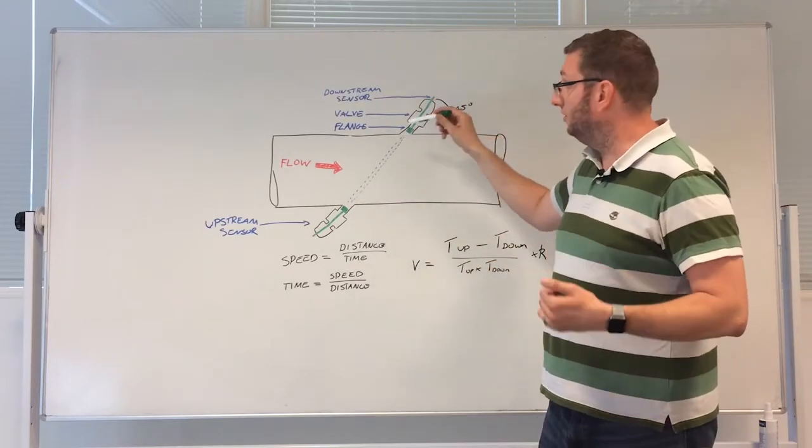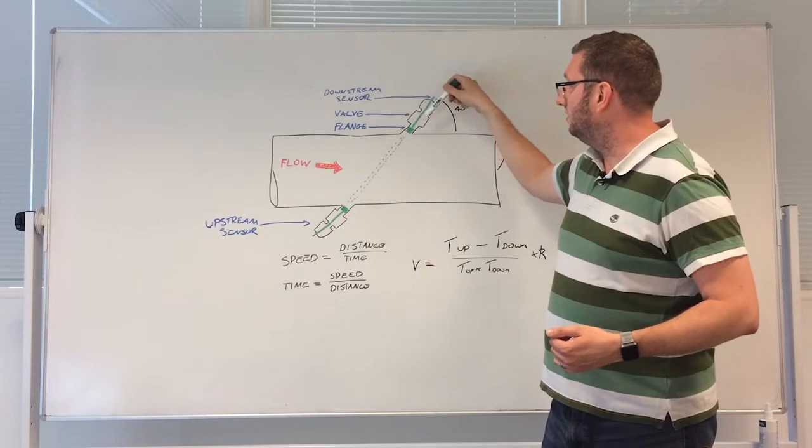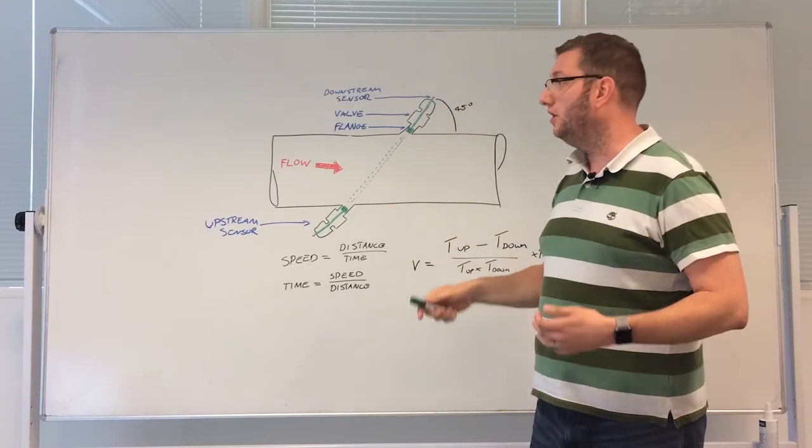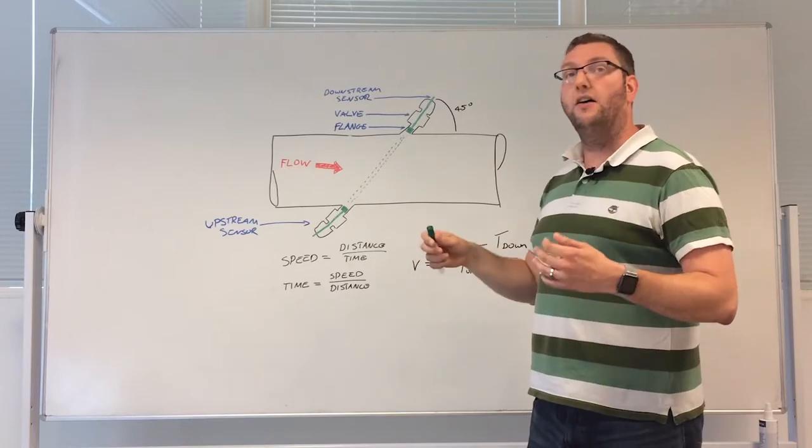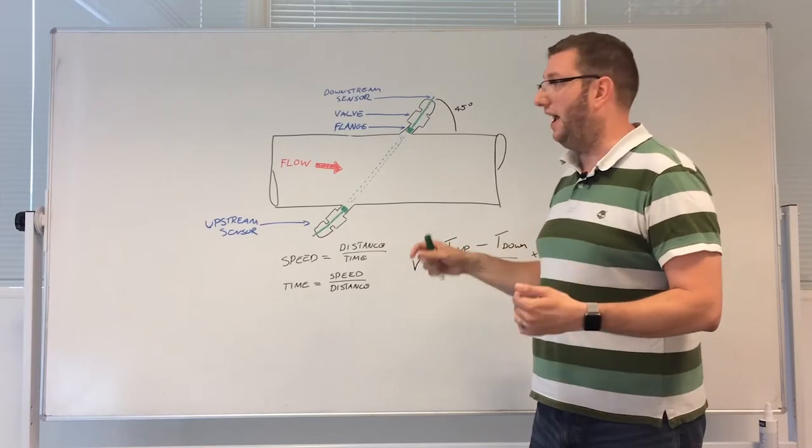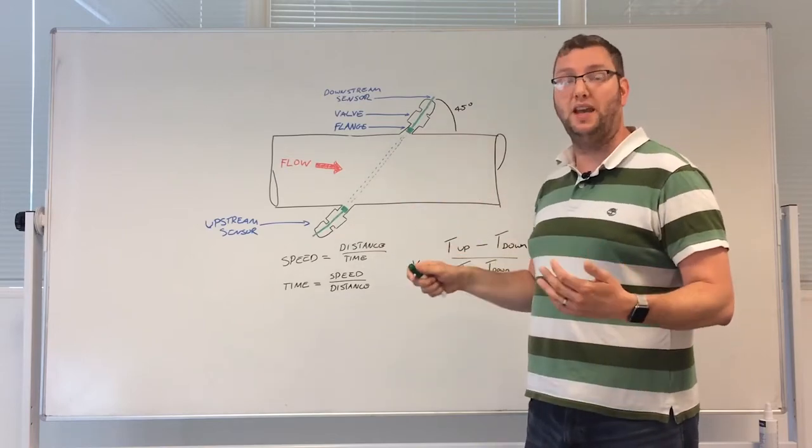The converse is also true, so these sensor signals coming from downstream to upstream are going into the direction of flow so they are slowed. Now the faster the flow coming down the pipe, the bigger that effect, so the time of flight will begin to separate.